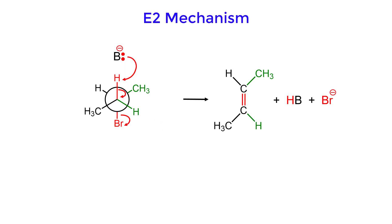Notice that the green hydrogen and the green methyl group are on the same side in the Newman projection, are also on the same side in the alkene.